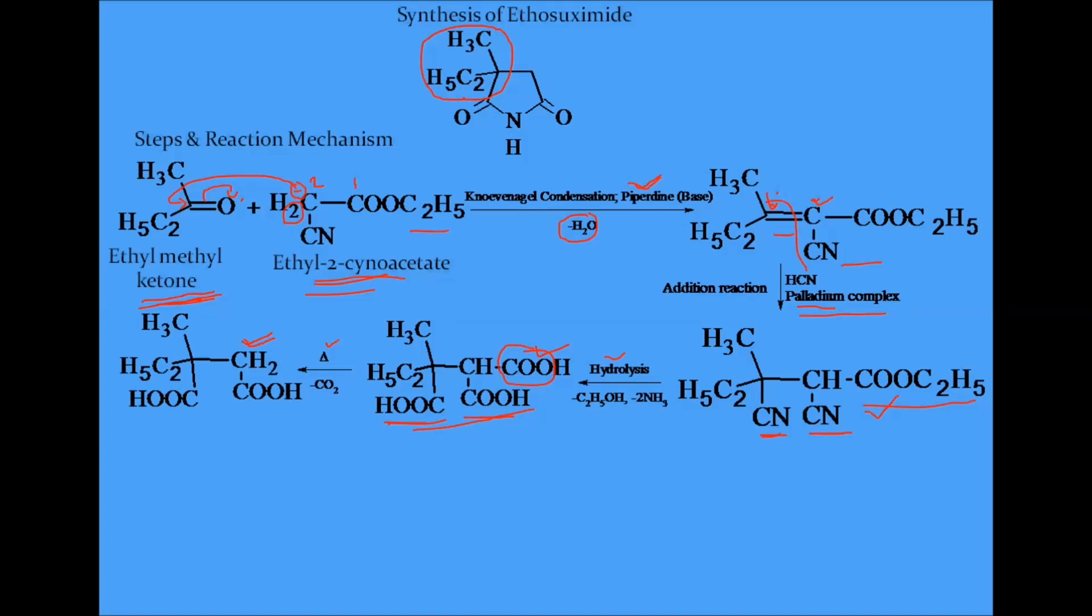By heating, the CO2 from this carbon will be removed. So CONH2 is created. Again, by adding ammonia, the COOH group is converted into CONH2. So two CONH2 groups form by this reaction and removal of two water molecules.